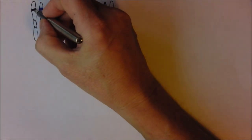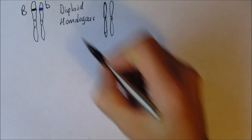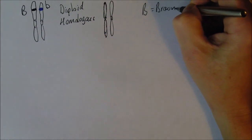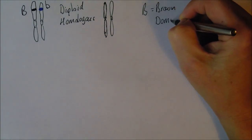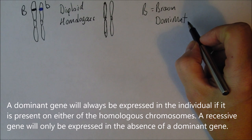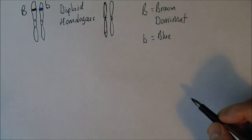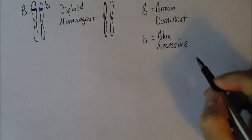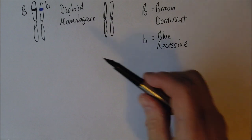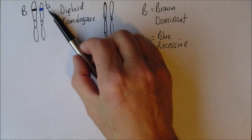For example, this gene here could be for brown eyes and this gene here could be for blue eyes. I've put the B in capital letters because the B for brown is the dominant gene. A dominant gene is one which will be expressed if it is present. Conversely, the small B for blue eyes is a recessive gene — a gene which will only be expressed in the absence of a dominant gene. So in this parent we have one gene for brown eyes which is dominant and one gene for blue eyes which is recessive.